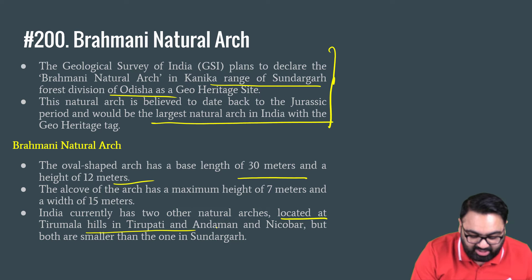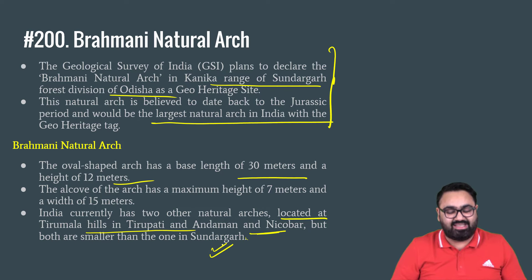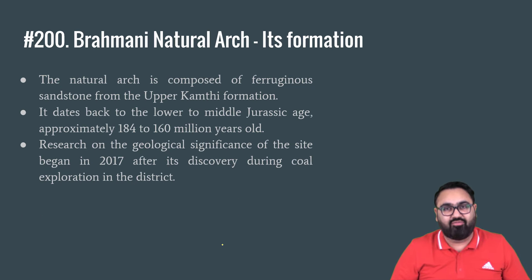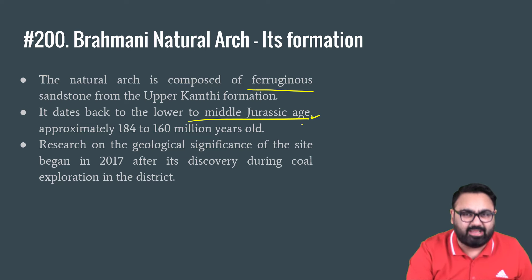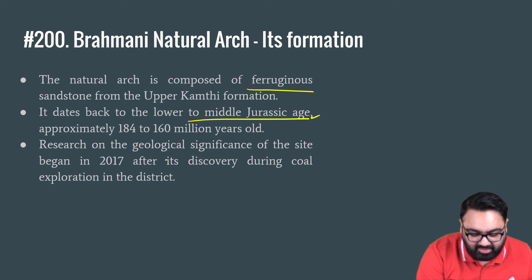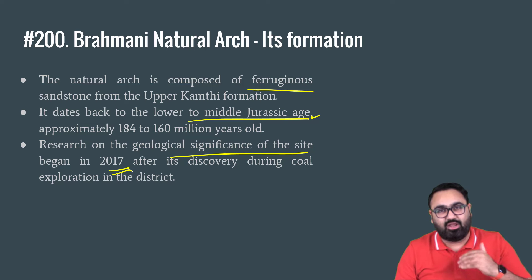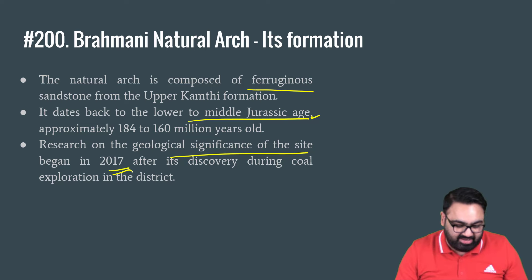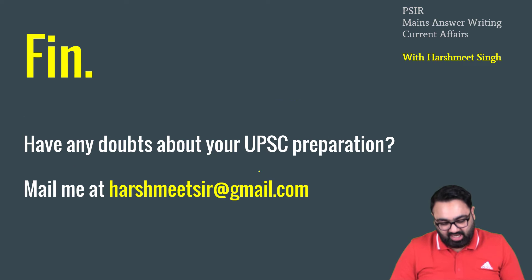Apart from this, India also has two other natural arches that are very famous among tourists — one in the Tirumala Hills in Tirupati and the other in the Andaman and Nicobar Islands — but both are much smaller than the one in Sundargarh. The Brahmani Natural Arch is composed of ferruginous sandstone and dates back to the lower to middle Jurassic period. Its geological significance was only recognized beginning in 2017 when it was discovered during coal exploration in the district. Since then, a lot of study has been conducted in and around this arch.